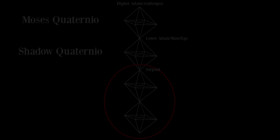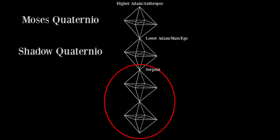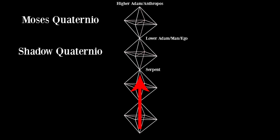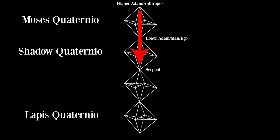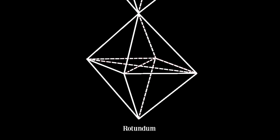I will be taking a different approach with the remaining double pyramids in this chapter. I will be describing the next two from the bottom up. The bottom double pyramid is known as the lapis quaternio. The very bottom dot in the chain is labeled as rotundum, and the top of this double pyramid is labeled, naturally, lapis.